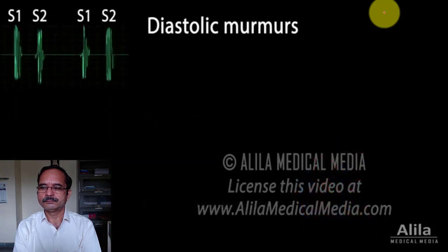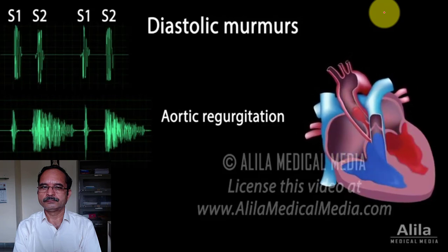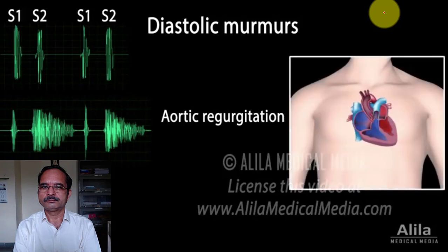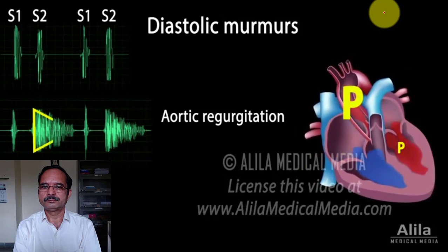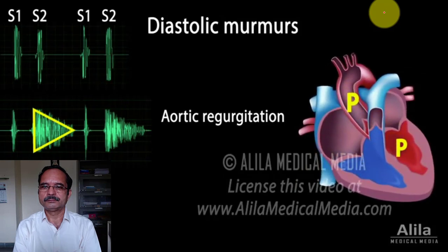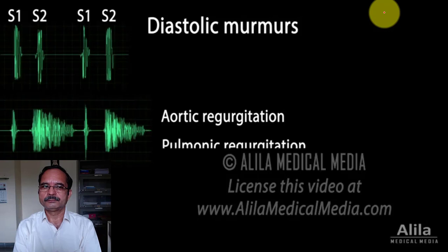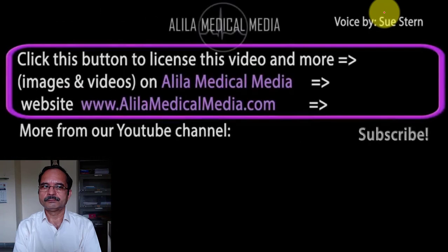Aortic valve regurgitation is an example of diastolic murmurs. This is when the aortic valve does not close properly, resulting in blood flowing back to the left ventricle during diastole — the filling phase. The murmur is best heard not in the aortic area but rather along the left sternal border. It peaks at the beginning of diastole when the pressure difference is highest, then rapidly decreases as equilibrium is reached. Other common diastolic murmurs are associated with pulmonic regurgitation, mitral stenosis, and tricuspid stenosis.